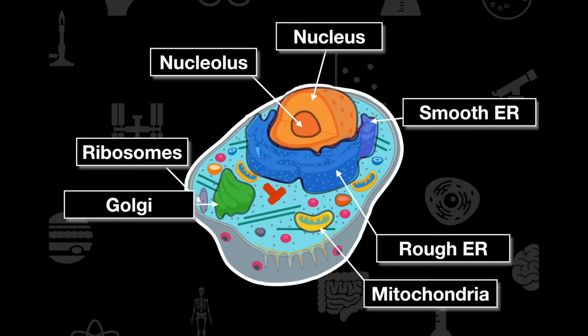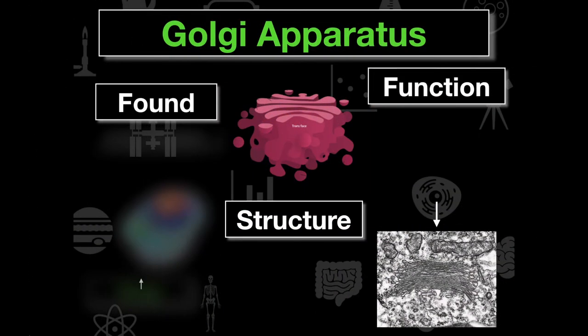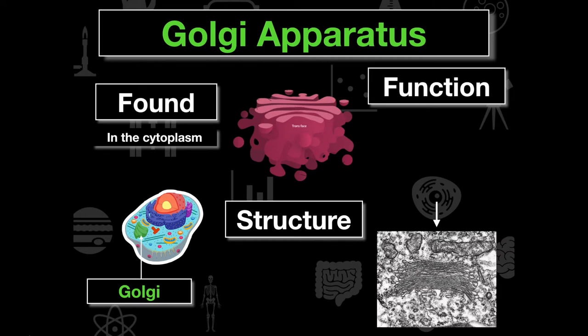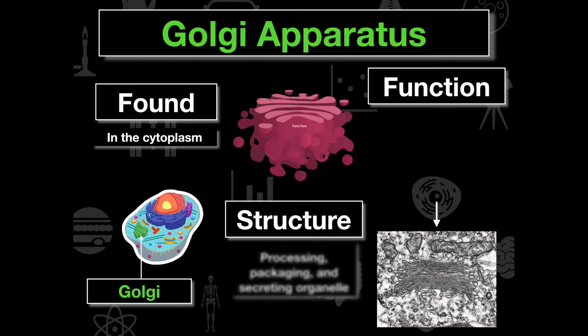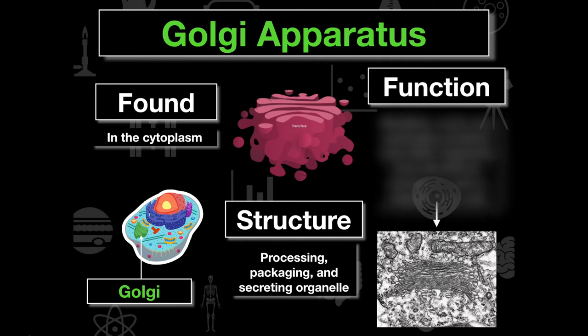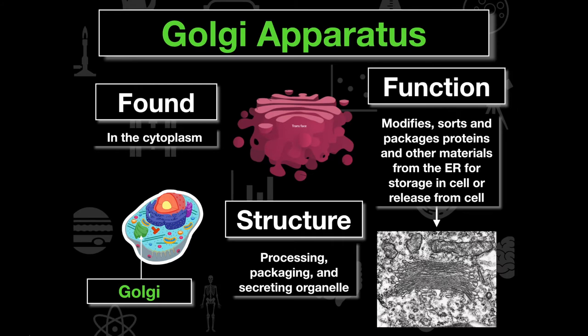The next organelle is the Golgi apparatus, found within the cytoplasm further out from the endoplasmic reticulum. The structure of the Golgi looks like a folded pancake stack. Its entire function is to process, package, and secrete products for all of our organelles — modifying and packaging proteins and sometimes lipids that have come from the ER so they can be released into the cell or outside of the cell. The Golgi is like a complex packaging and shipping center.